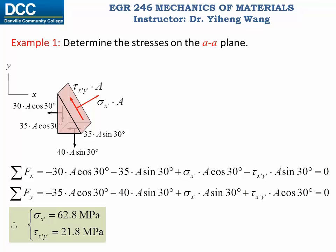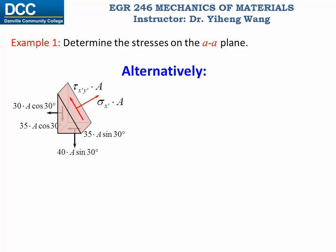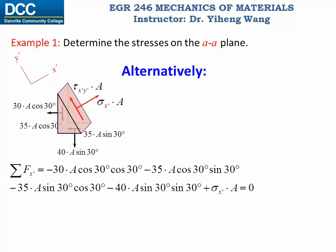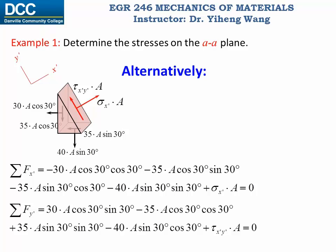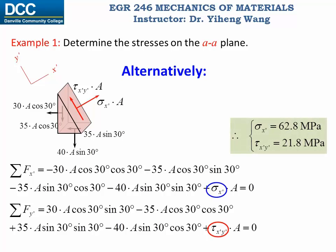As you probably noticed, during this approach the two unknowns showed up in both equations, requiring simultaneous solution. For convenience, we would like to avoid solving a system of equations. Therefore, alternatively, we set up an x prime y prime coordinate system aligned with the directions of the new normal stress and new shear stress. With this approach, the unknowns only appear once in each equation and can be solved independently, giving the same answer.